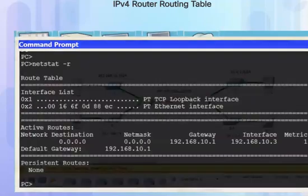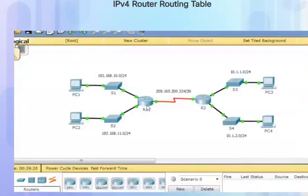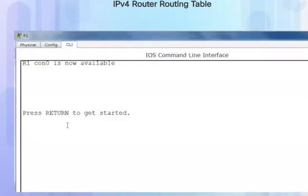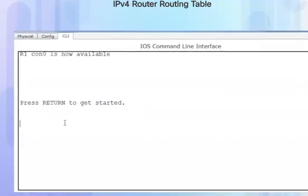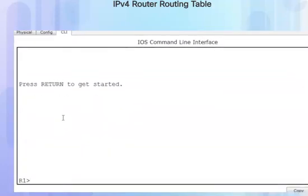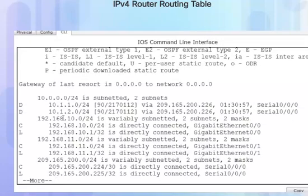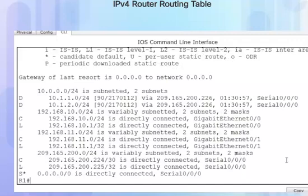To look at the router's routing table, I'll click on router R1 and click on the CLI tab to get to the command line interface. I'll press Enter to get to the command line, type 'enable' to get to privileged exec mode, and then the command to see the routing table is 'show ip route'. I'll press the spacebar to get the rest of the output.